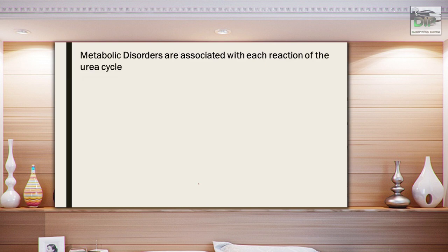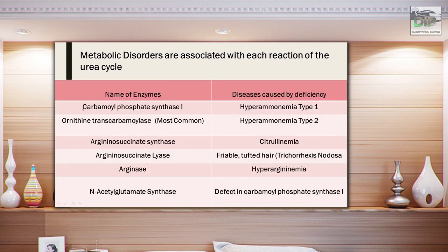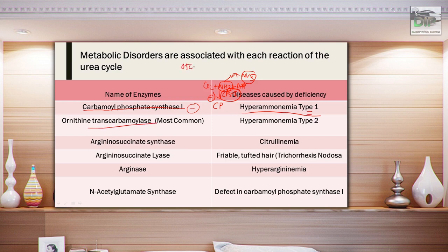Metabolic disorders are associated with each step of the pathway. The first rate-limiting step involves CPS1: if CPS1 is deficient, ammonia cannot be converted into carbamyl phosphate, leading to increased ammonia in the blood — a condition known as hyperammonemia type 1. Ornithine transcarbamylase converts carbamyl phosphate to citrulline by linking with ornithine. If ornithine transcarbamylase is deficient, there is excess ammonia (hyperammonemia) as well as accumulation of ornithine.